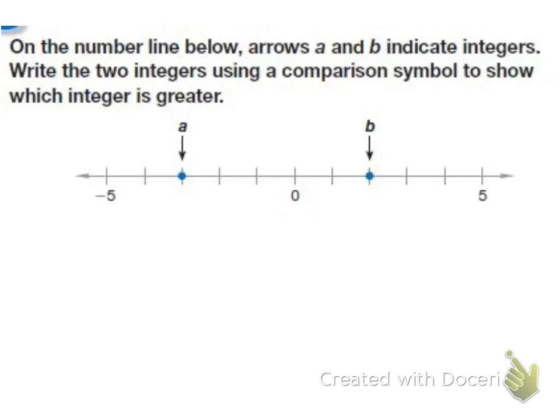On this problem, it says on the number line below, arrows A and B indicate integers. Write the two integers using a comparison symbol to show which integer is greater. So first we have to figure out what these are. So starting at zero, we're going to count the units to the left. So we have one, two, three. So that means A is at negative three.